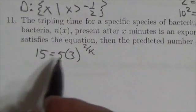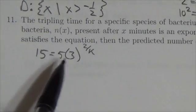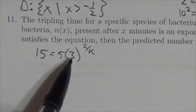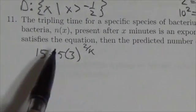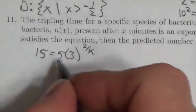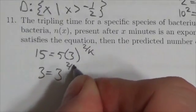A lot of people screw this up. A lot of people do order of operations wrong here. You can't multiply the 5 by the 3 because this isn't 3. This is 3 to the power of 2 over k. So you can't do that. You got to divide that 5 over first to make this 3 equals 3 to the 2 over k.